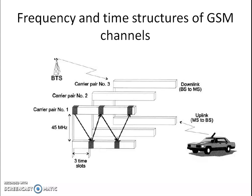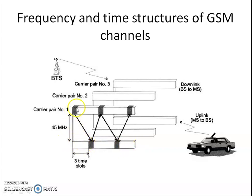In FDMA technology, we have seen that the two carriers used for uplink and downlink will always be in a pair. BTS communicates to the mobile station on the downlink, whereas the mobile station communicates with BTS on the uplink. So it will always be in a pair, and the separation between the pair is 45 MHz.